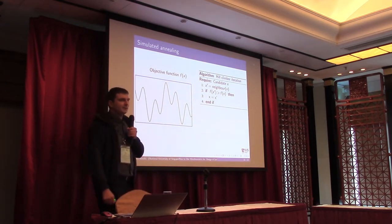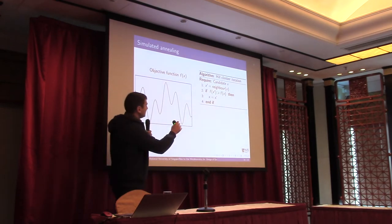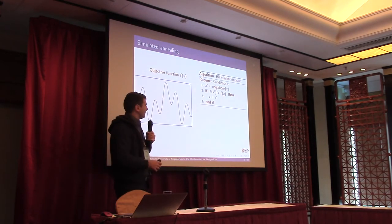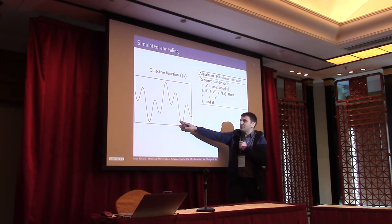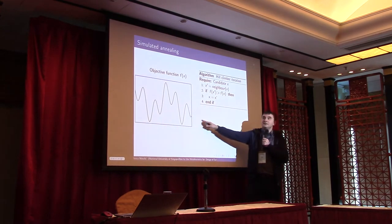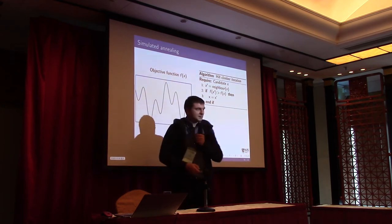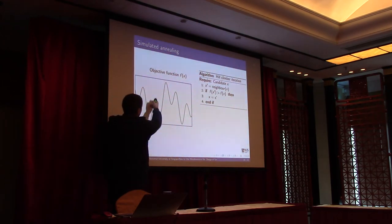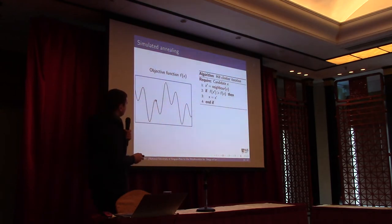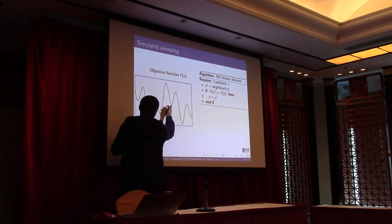In hill climbing, you have a candidate solution at some point. From this point you generate another point in the neighborhood. If the value of the objective function at the new point is higher, you accept it as the new candidate. It's extremely simple. You continue generating candidates in the neighborhood, accepting those with higher function values. If the value is lower, you reject it and go back. Eventually hill climbing finds an optimum, but only the local optimum — it always gets stuck there unless you start near the global optimum.